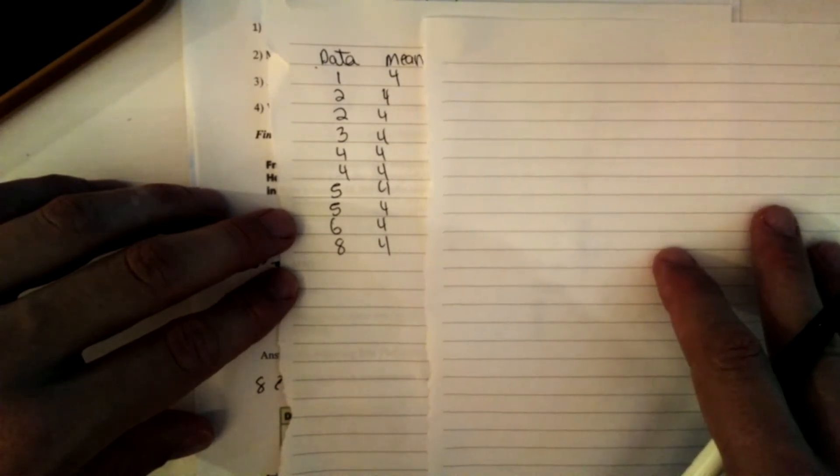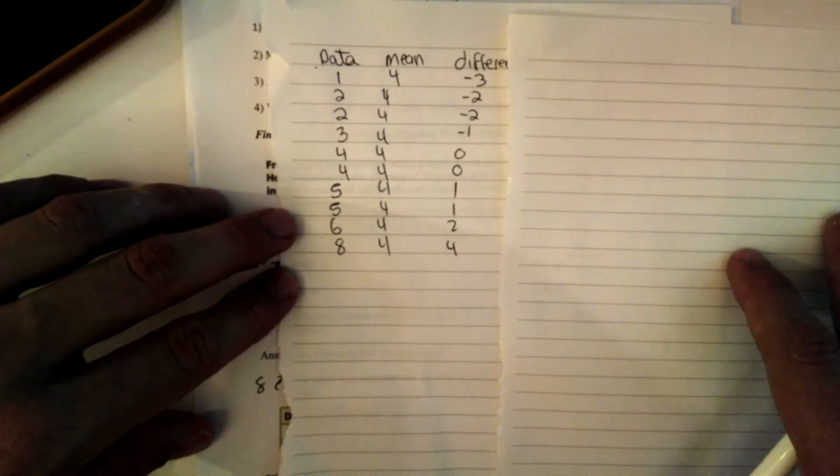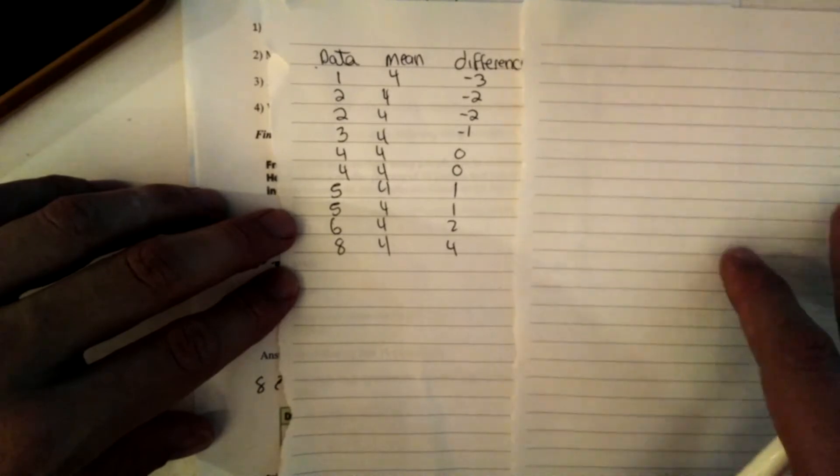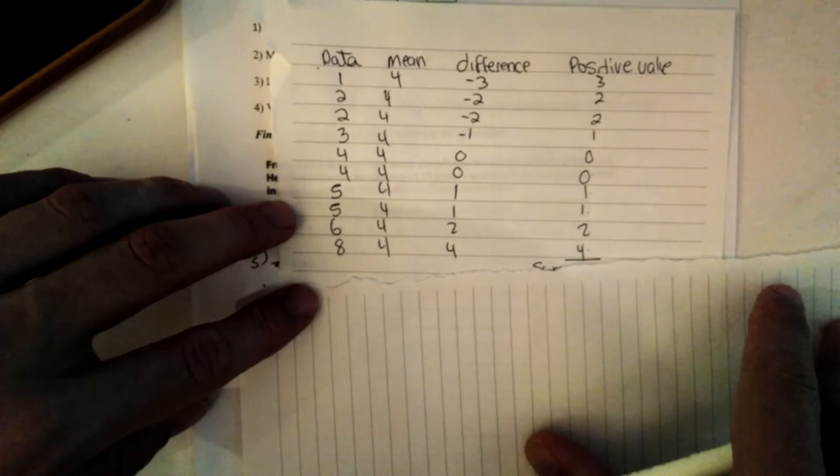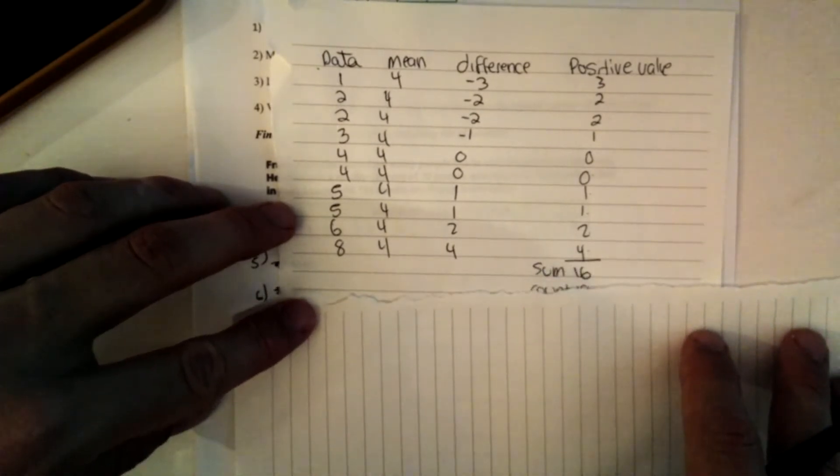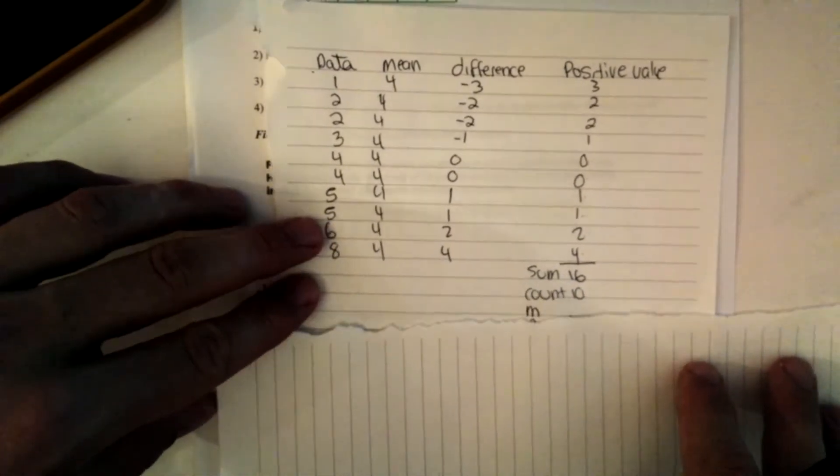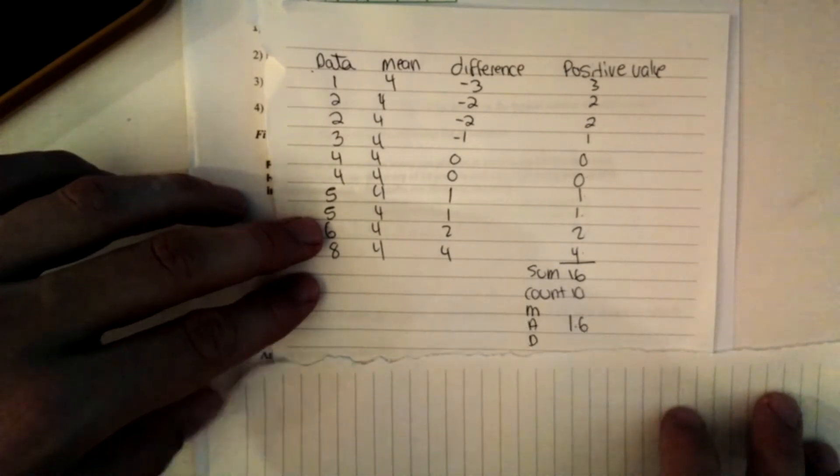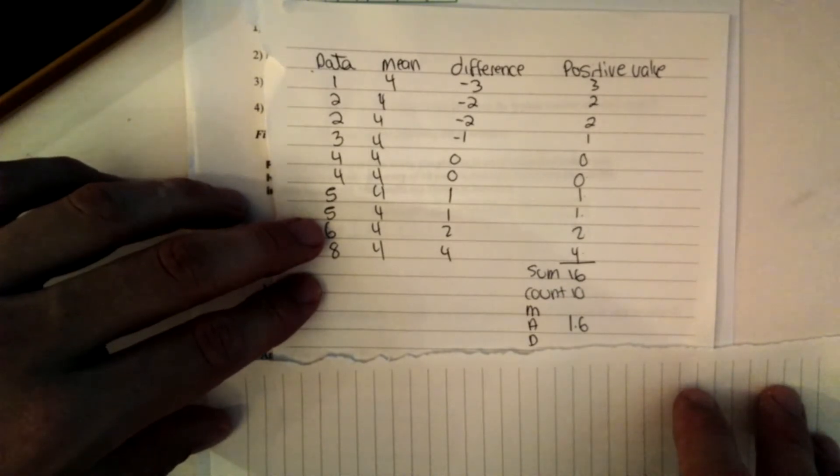Continuing to follow the graphic organizer, we need to find the difference. When we find the difference of each number, we end up with this here. Now that we've found the difference, we have to find the positive value since it's absolute value deviation. I'm going to find the positive values and end up with these numbers here. The next step is to find the sum. And when I add up all the numbers, I get 16. There's 10 total numbers. So 16 divided by 10 is 1.6. So my mean absolute deviation for this question is 1.6.